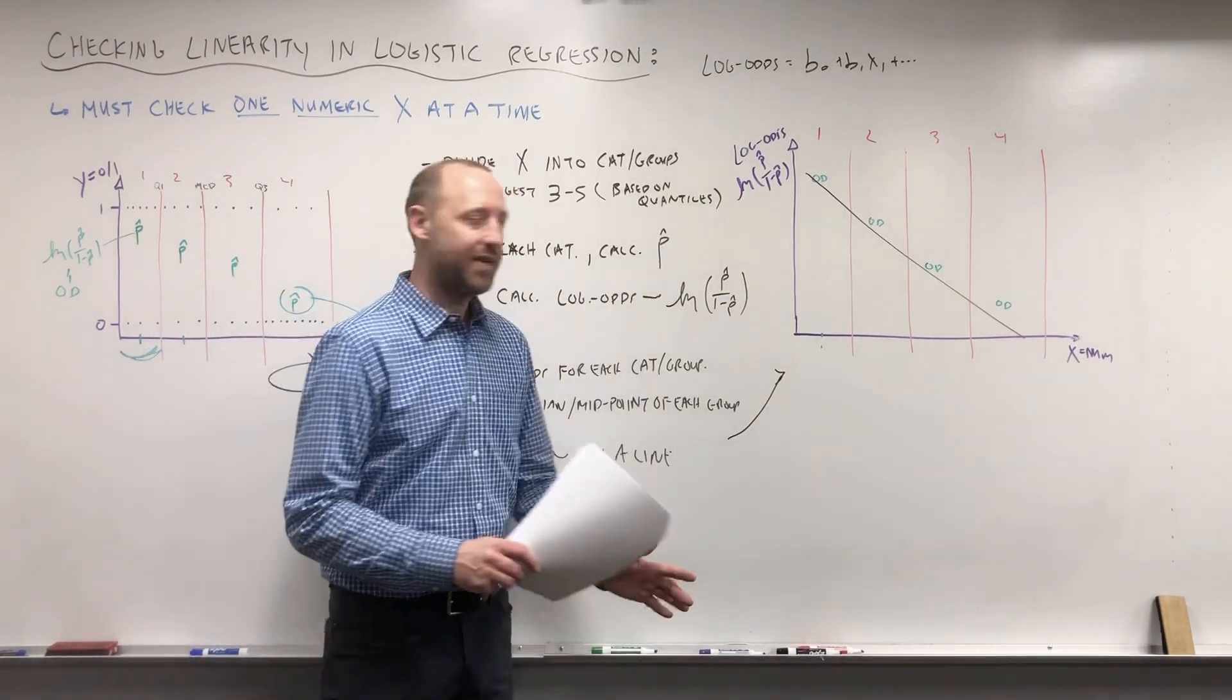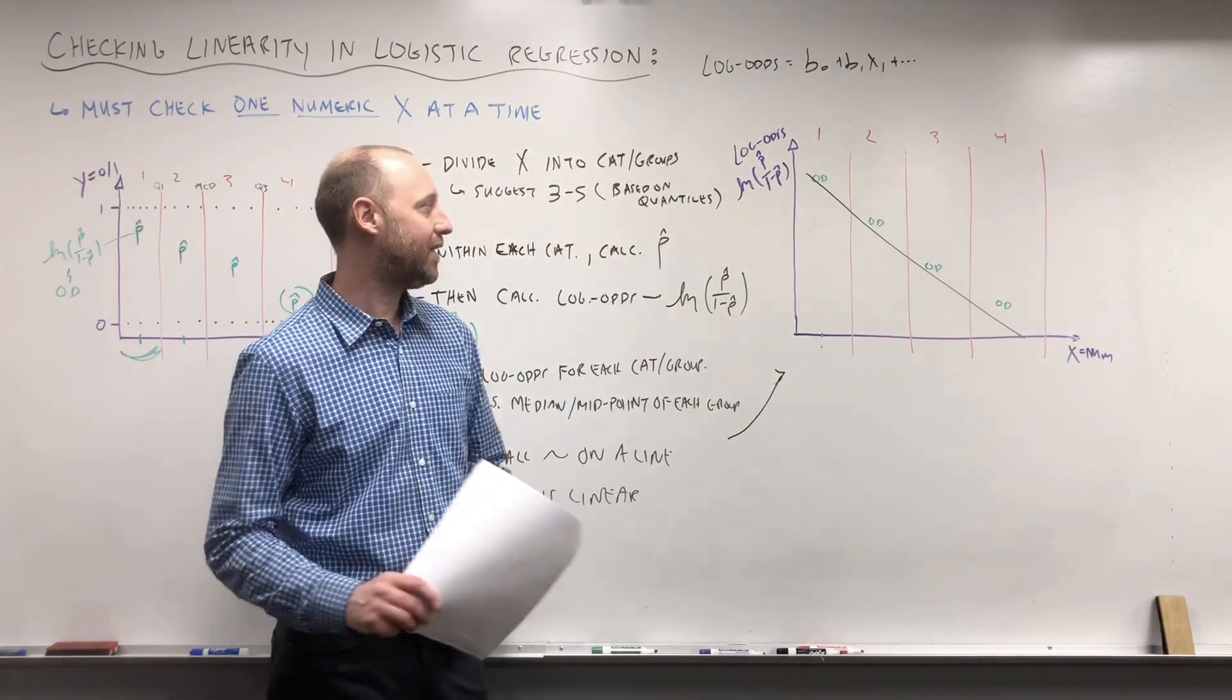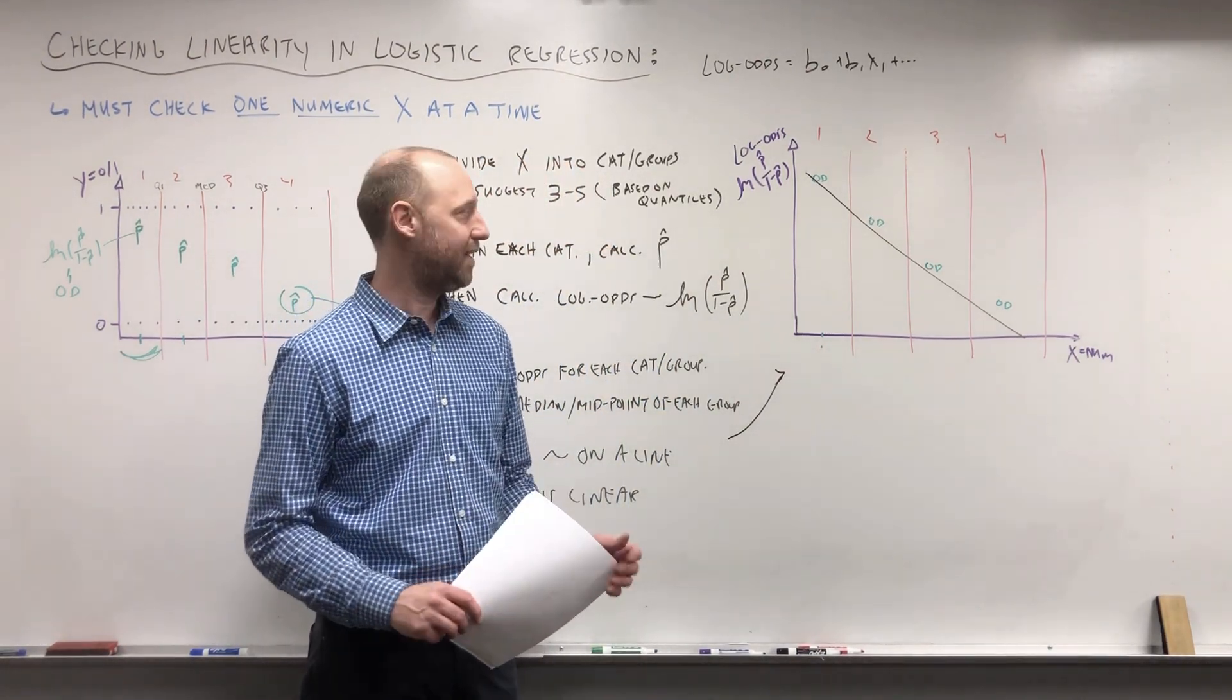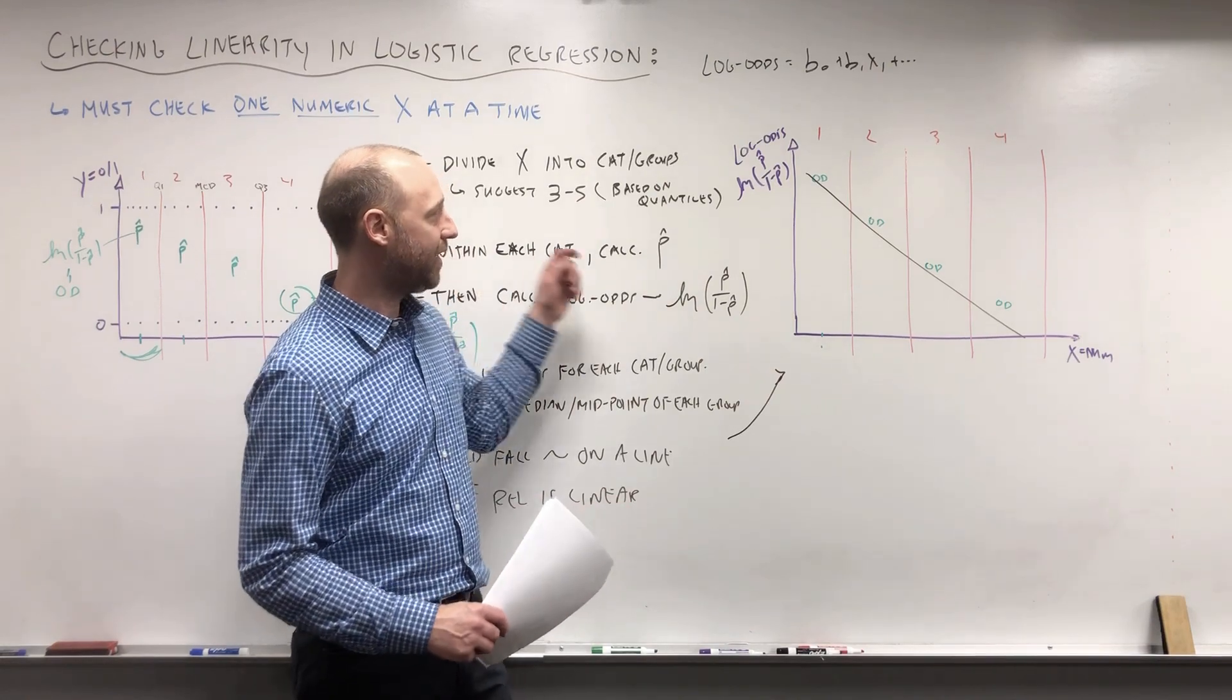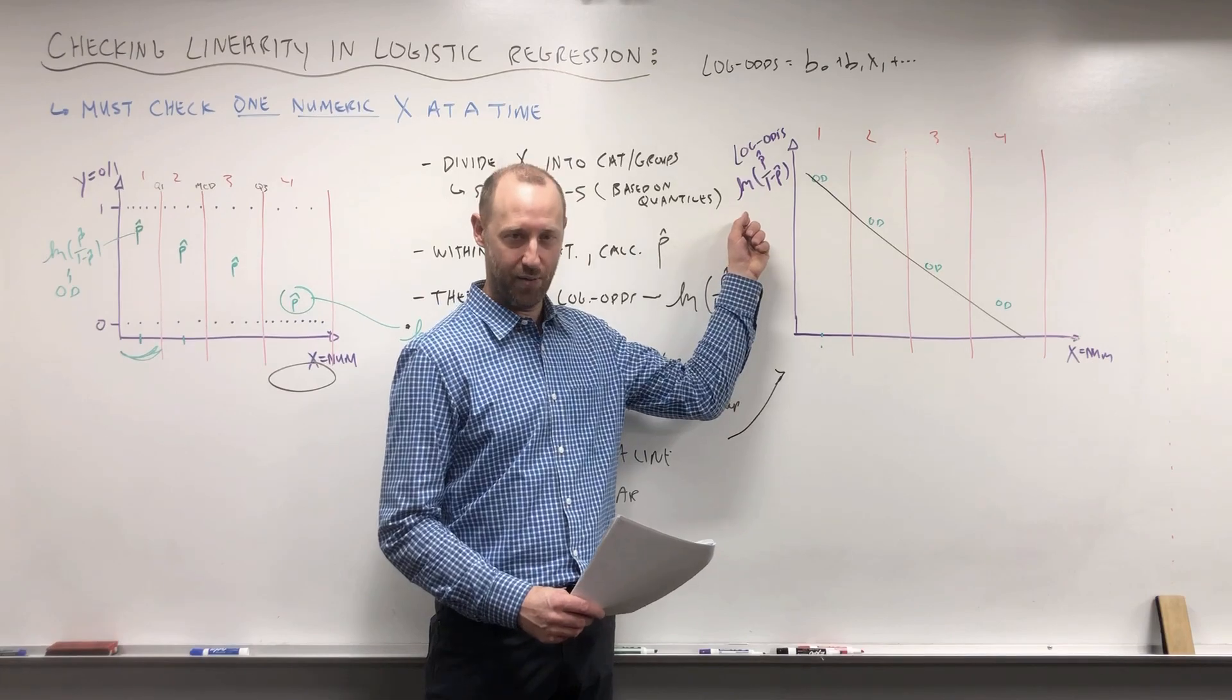So this is the conceptual explanation of how we can check linearity. What we're going to do now is look at our data set and going into R and examining the linearity between a numeric variable and the log odds of the outcome.